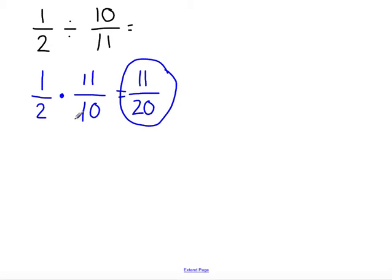You could also use the giant one method. If this one makes more sense to you, I'll use a different color. You can do one half and put it over 10 over 11. We make our giant one.